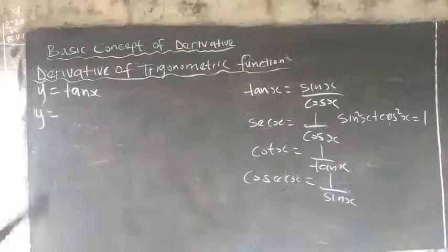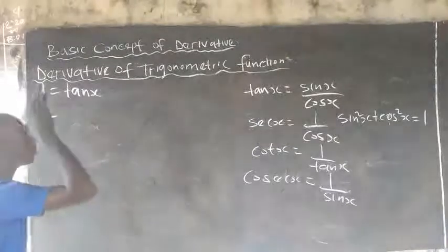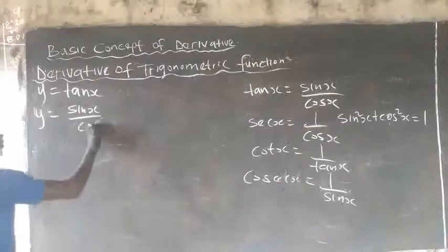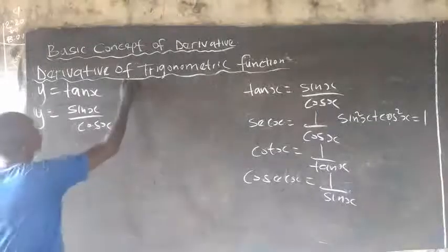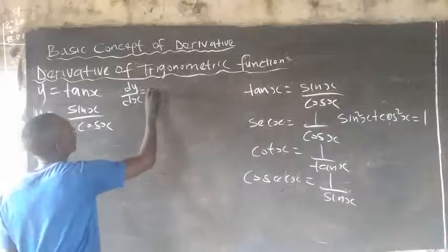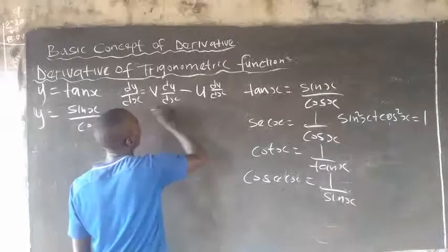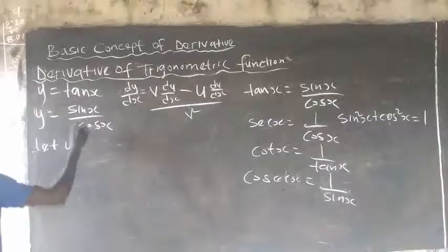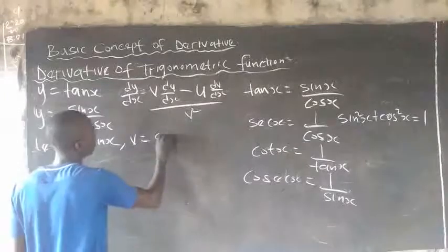So here, y equals tan s, which is nothing but sin s over cos s. We substitute sin s over cos s for tan s. Don't forget that the quotient rule is: dy/ds equals (v·du/ds − u·dv/ds) all over v squared. So let u equal sin s and v equal cos s.